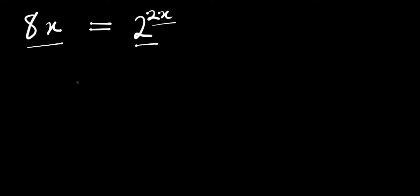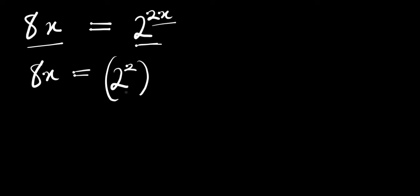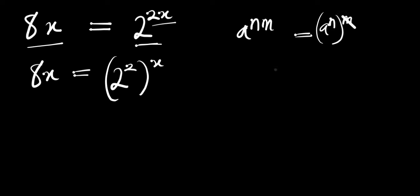In order to solve this problem we can write it as 8^x equals, instead of 2^(2x), we can have (2^2)^x. Remember if you have a^n raised to the power n, this equals a^(n·n). So that means you can have 8^x equals 2^2, which is 4, raised to the power of x.